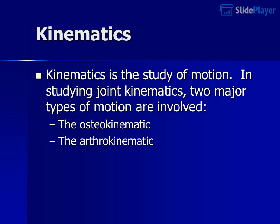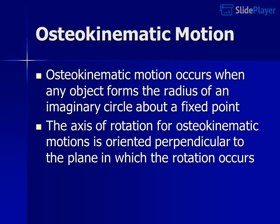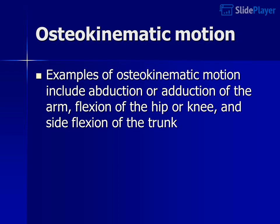Kinematics is the study of motion. In studying joint kinematics, two major types of motion are involved: osteokinematic and arthrokinematic. Osteokinematic motion occurs when any object forms the radius of an imaginary circle about a fixed point. The axis of rotation for osteokinematic motions is oriented perpendicular to the plane in which the rotation occurs. Examples include abduction or adduction of the arm, flexion of the hip or knee, and side flexion of the trunk.